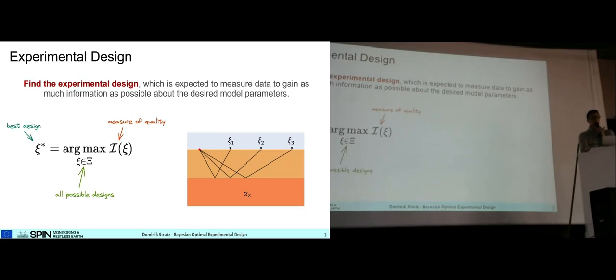But what is a design actually? A design is basically anything that describes your experiment. In the simplest case, this could just be the offset of your seismometer from an artificial source. But it can be truly anything. In geophysics, for example, it could be a rotational or translational sensor.